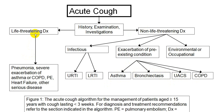Among life-threatening acute conditions, the most common are bacterial pneumonia and viral pneumonia, followed by acute exacerbation of bronchial asthma or COPD, pulmonary embolism, acute left ventricular failure, and other dangerous conditions like pneumothorax and foreign body aspiration.